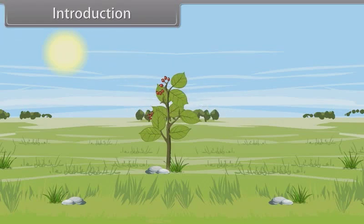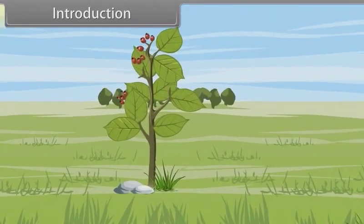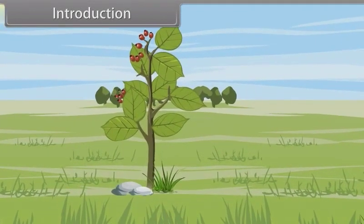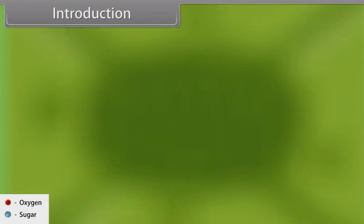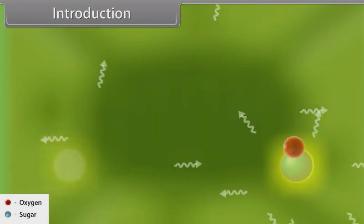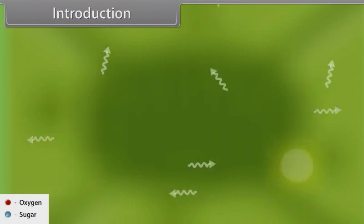Hey kids, we have learned so many things about plants. Now we learn about respiration in plants. Respiration is a process of burning sugar to produce energy for growth, reproduction, and other activities of life.